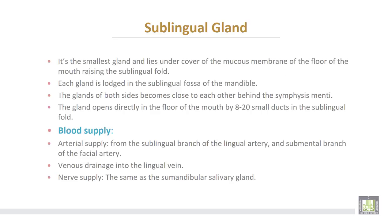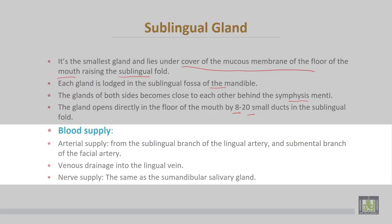The sub-lingual gland is the smallest salivary gland and lies under cover of the mucous membrane of the floor of the mouth, raising the sub-lingual fold. Each gland is lodged in the sub-lingual fossa of the mandible. The glands of both sides become close to each other behind the symphysis menti. The gland opens directly into the floor of the mouth by about 8 to 20 small ducts in the sub-lingual fold. Arterial supply is from the sub-lingual branch of the lingual artery and the sub-mental branch of the facial artery. Venous drainage goes to the lingual vein. The nerve supply is the same as the sub-mandibular salivary gland, from the chorda tympani carried by the lingual nerve.